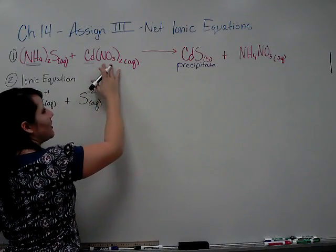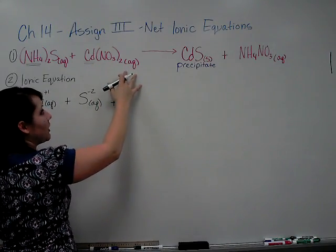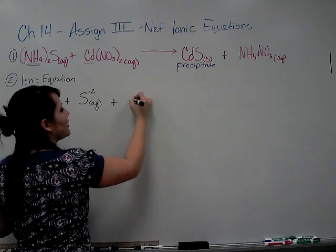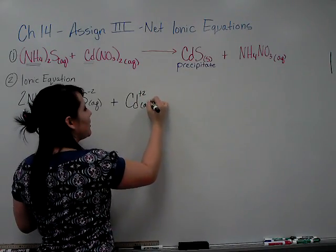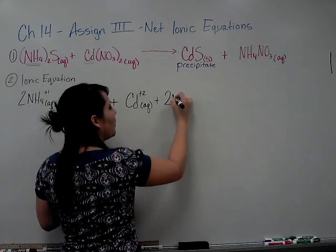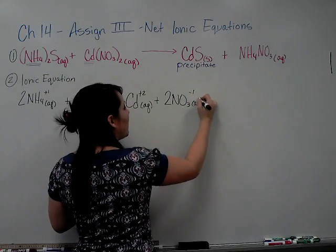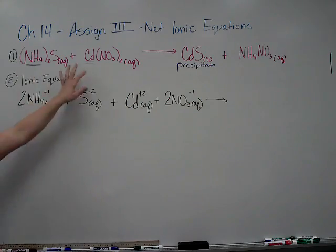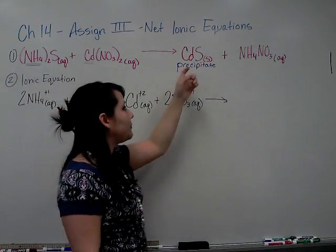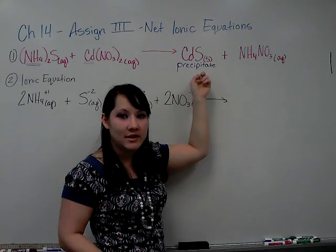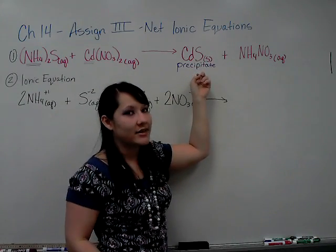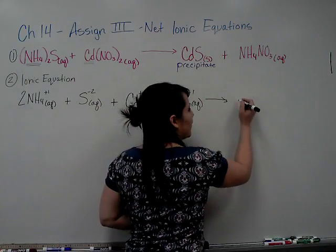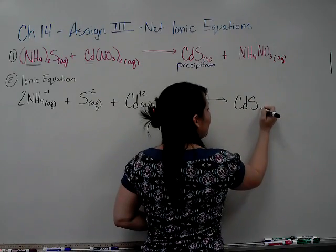Now we're going to take cadmium nitrate and dissociate it because it is aqueous. We have one cadmium ion and we have two nitrate ions. So cadmium is Cd plus 2 aqueous, plus 2 nitrate ions and those are also aqueous. You can draw your arrow. So we broke down both of our reactants. Now let's go to the product side. Because cadmium sulfide is insoluble, it will not dissociate. So you cannot break it down. You have to leave it exactly the way it is. So you're going to write cadmium sulfide solid.